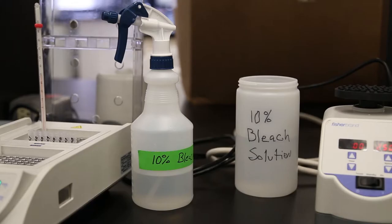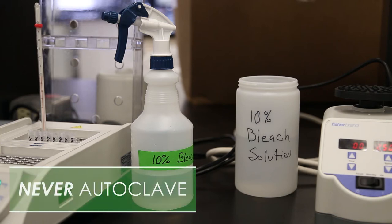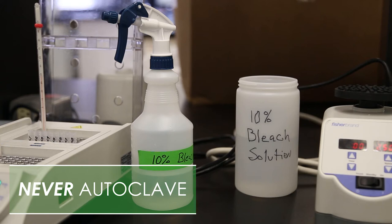Mix up a fresh container of 10% bleach solution daily. We recommend a sealable wide mouth container. The pipette tips and used reaction tubes and caps will go into this solution. A spray bottle with fresh 10% bleach solution is also recommended. We do not ever recommend autoclaving the pipette tips or the reaction tubes.